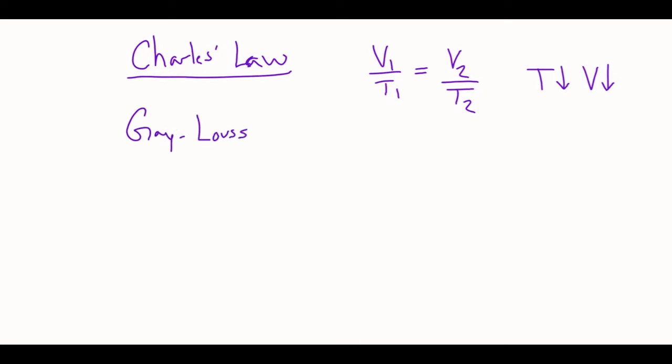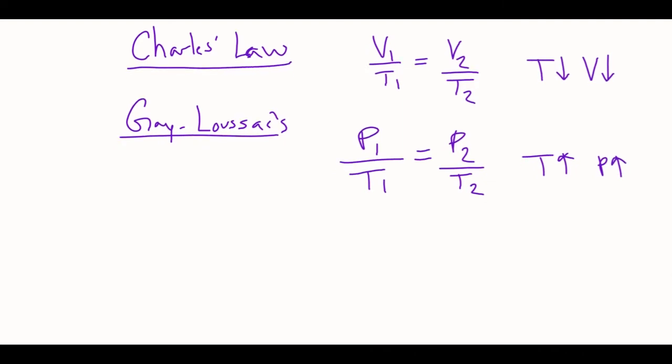So the next one, this guy's name is Gay-Lussac's Law. And that is P1 over T1 is equal to P2 over T2. And this relationship basically is if the pressure goes up, the temperature goes up. So when things get really hot, they move really fast. And therefore, they hit the walls of a container more. So there's more pressure.